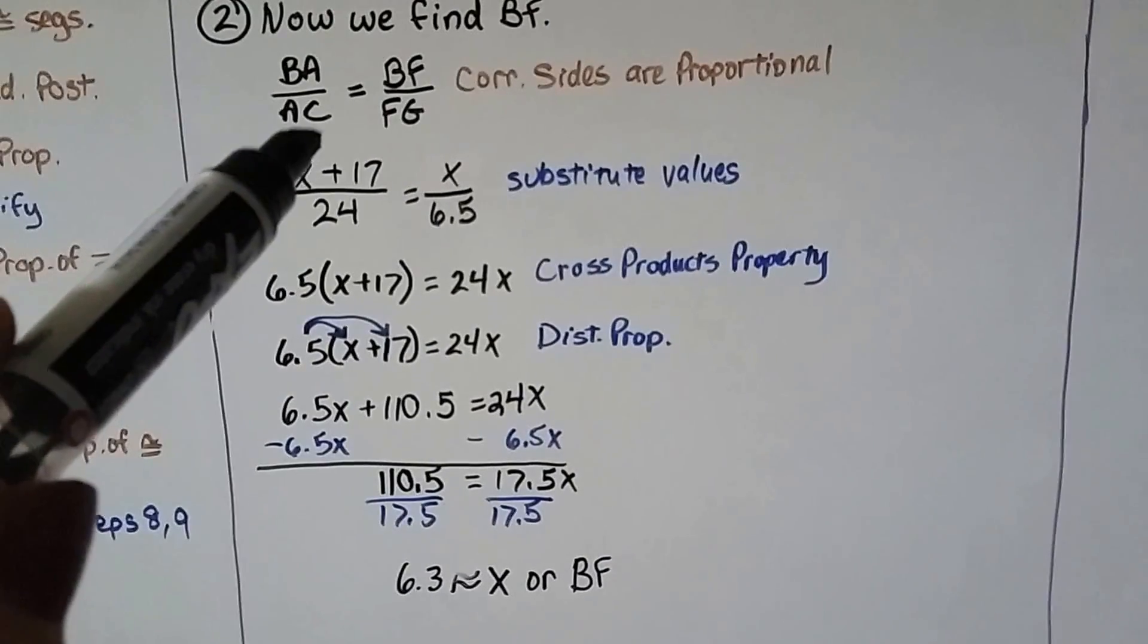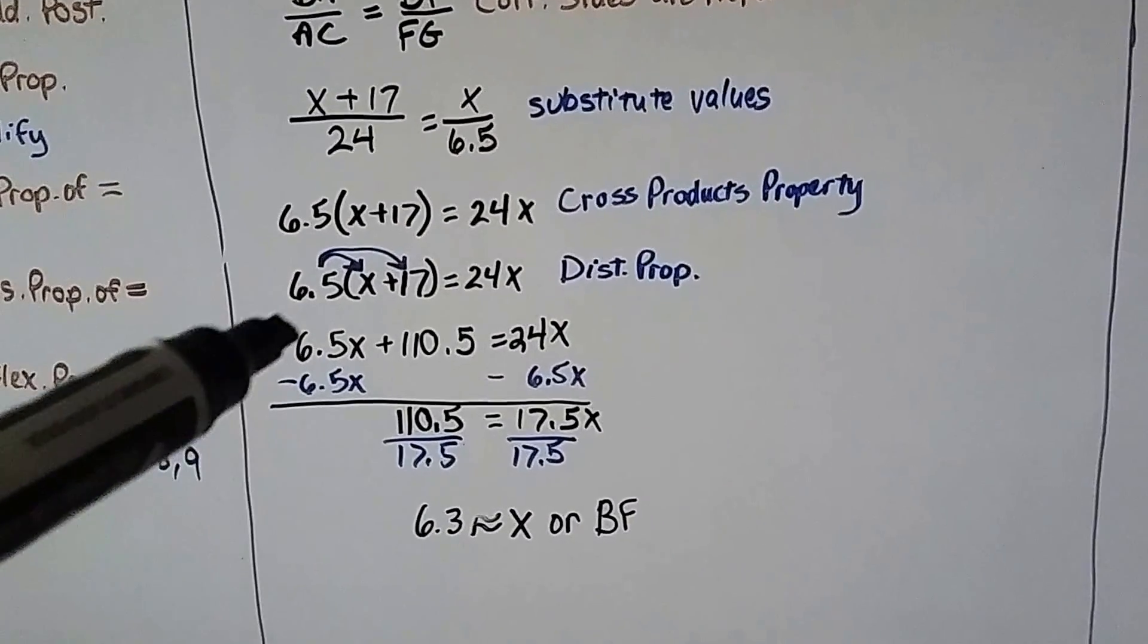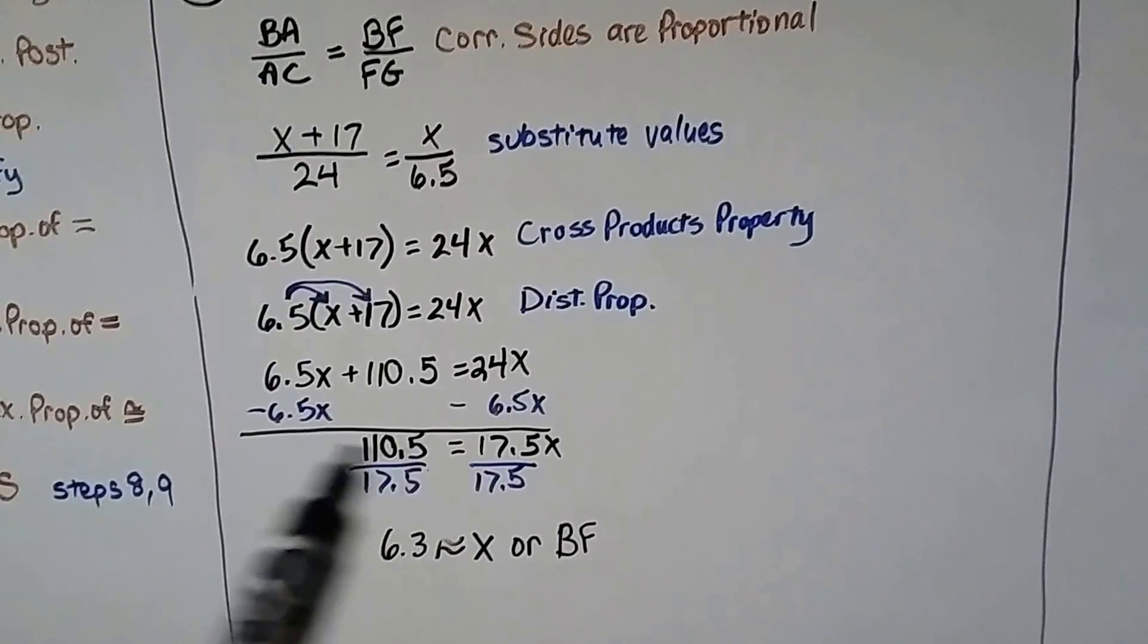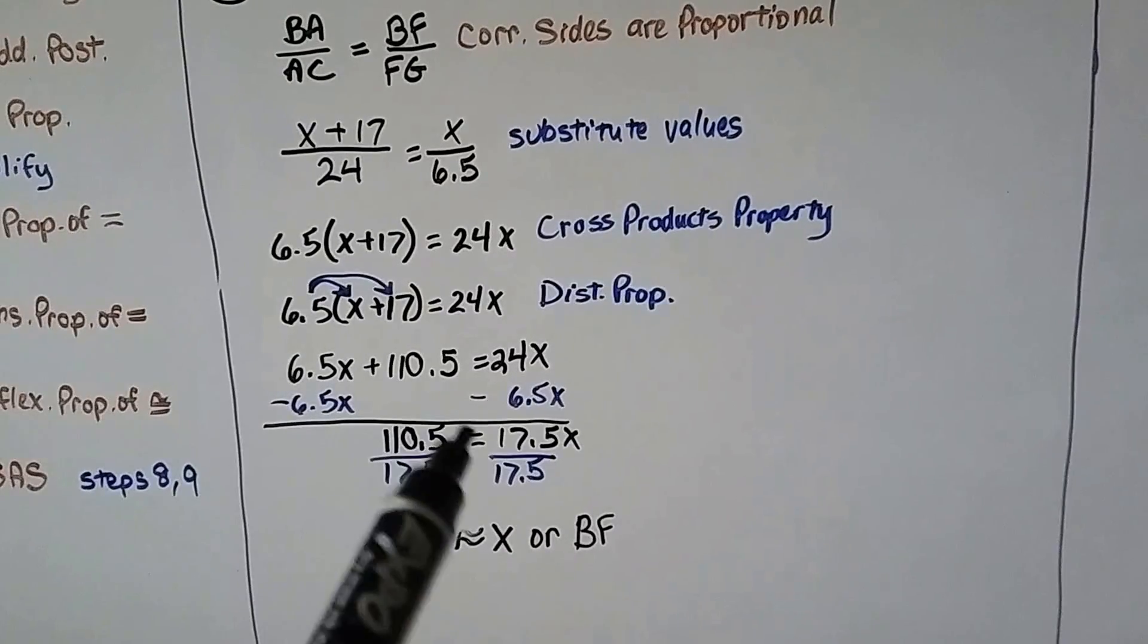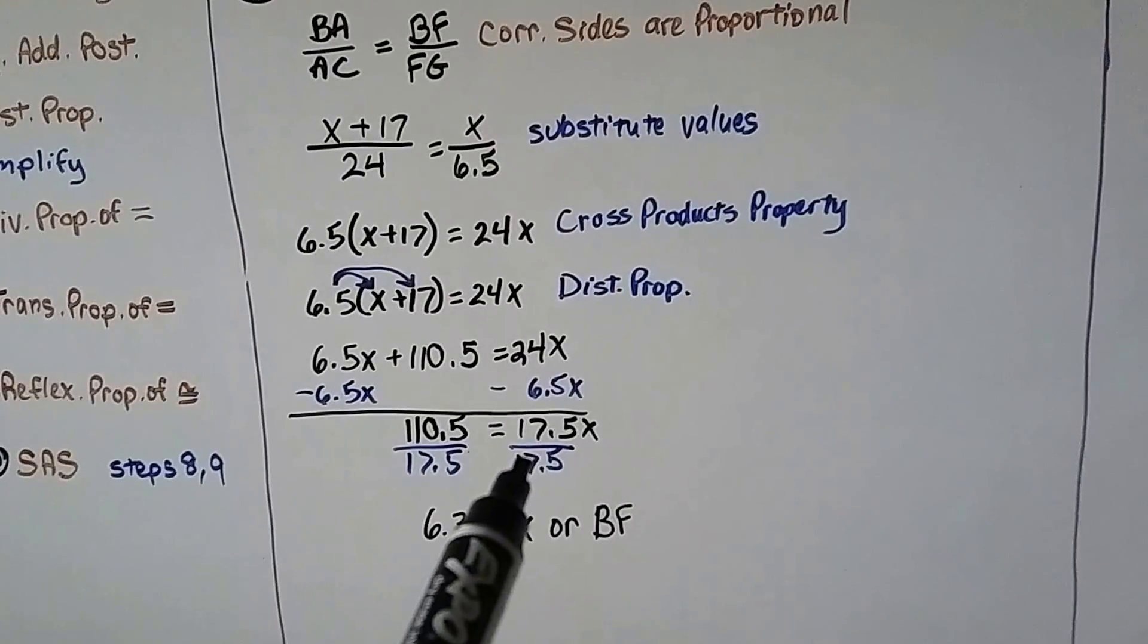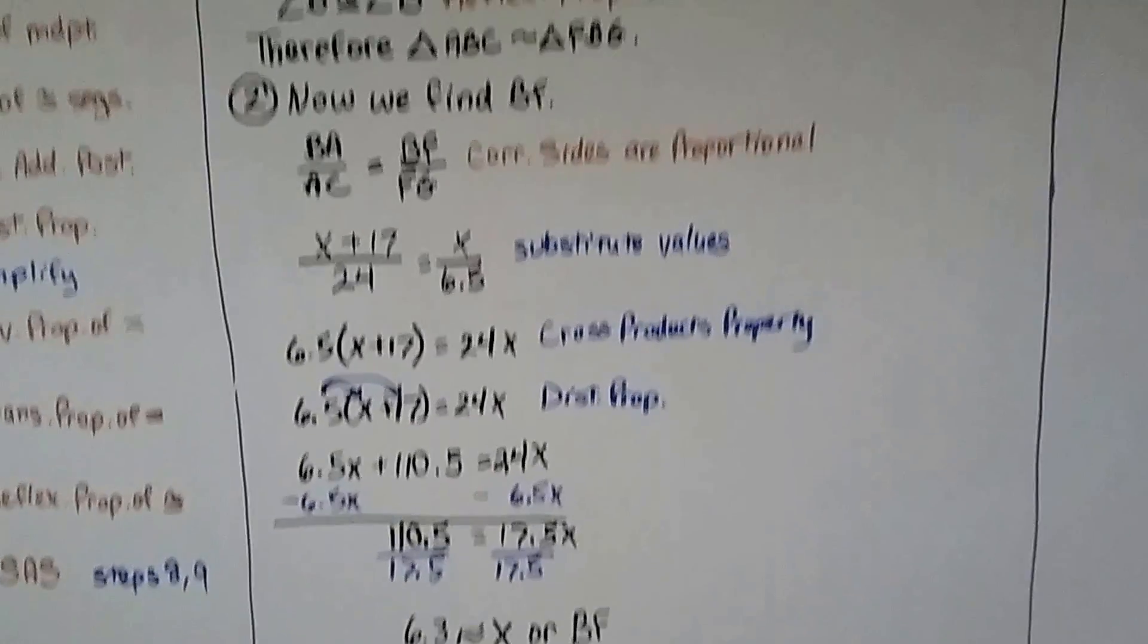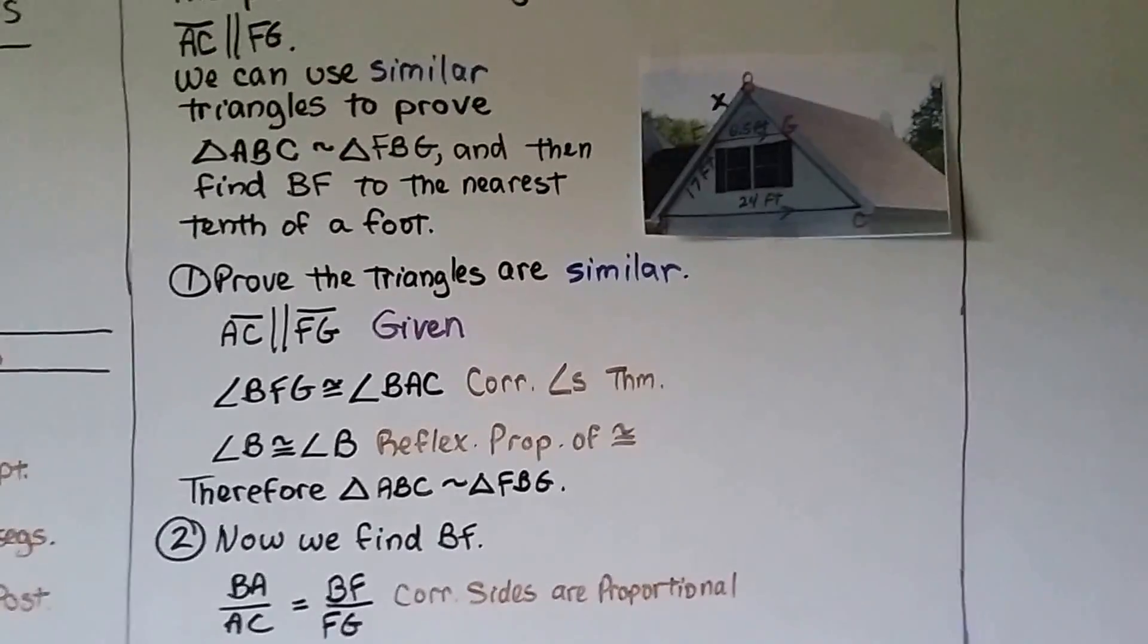Now we can do the cross products property. 6.5 times X plus 17 is equal to 24 times X. We distribute the 6.5, and we get 6.5X plus 110.5 is equal to 24X. Now we can subtract 6.5X from both sides. We get 110.5 is equal to 17.5X. Now we can divide both sides by the coefficient 17.5, and we get that 6.3 is approximately X, or we could say BF. So we know to the nearest tenth of a foot that BF is about 6.3 feet.